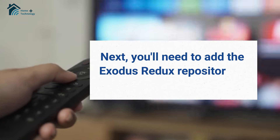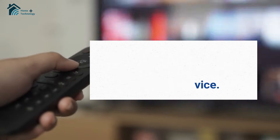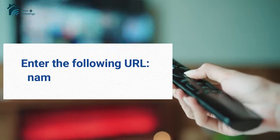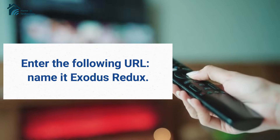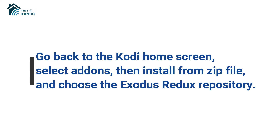Next, you'll need to add the Exodus Redux repository to your Kodi device — this is where you'll find the Exodus Redux add-on. To do this, go to the Settings menu in Kodi, select File Manager, then Add Source. Enter the following URL and name it Exodus Redux. Go back to the Kodi home screen, select Add-ons, then Install from Zip File, and choose the Exodus Redux repository.